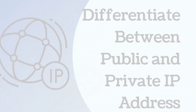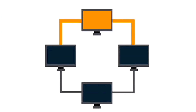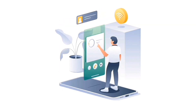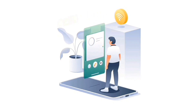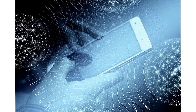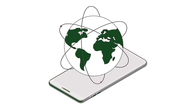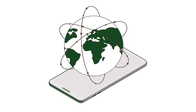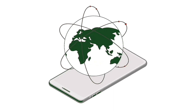Differentiate between public and private IP addresses. A private IP address is used within a local area network and is free of cost. A public IP address is used outside the network and there is a cost associated with using it. Public IP addresses are globally unique.